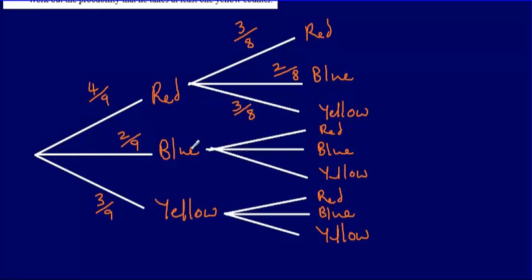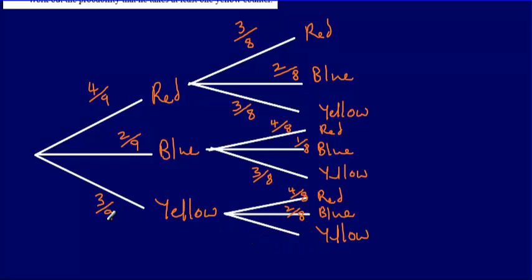If he chooses a blue first, there are still four reds, so that's four out of eight. He's chosen a blue, so blue is now one out of eight, and yellow remains three out of eight. If he chooses a yellow first, red stays at four out of eight, blue stays at two out of eight, and yellow — since one has been removed — becomes two out of eight.